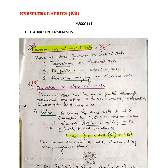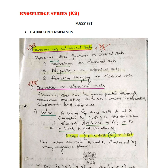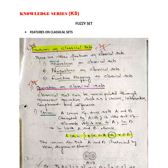Welcome to the Knowledge Series on the Areas Related to the Features of Classical Set. The Classical Set is categorized into three features. Classical Set means it allows membership elements in the sets in binary terms. Under Classical Set Theory, it is considered in three features: the first is logical operations, the second is properties, and third is functional mapping on Classical Set.